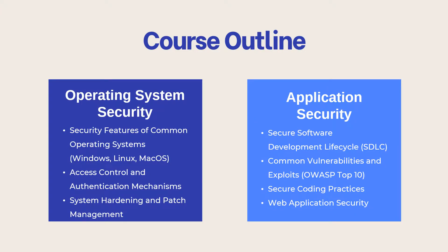Module 7: Operating System Security covers security features of common operating systems — Windows, Linux, and macOS — as well as access control and authentication mechanisms, and system hardening and patch management. Module 8: Application Security covers the Secure Software Development Lifecycle (SDLC), common vulnerabilities and exploits, the OWASP Top 10, secure coding practices, and web application security.